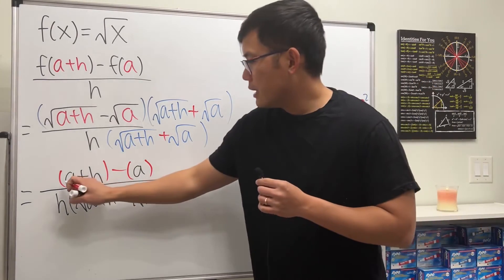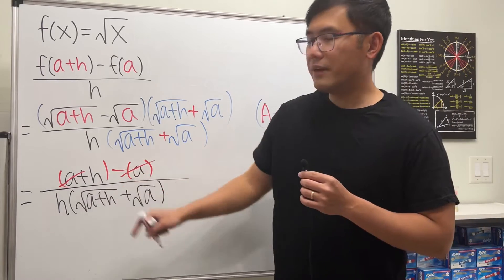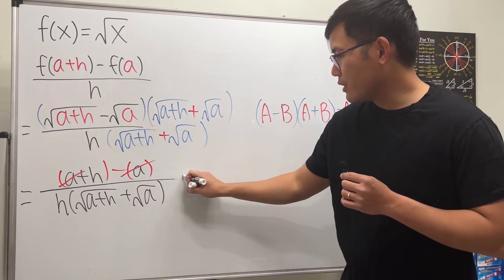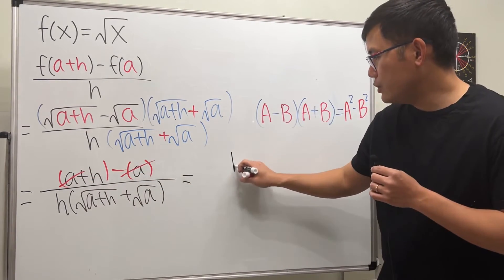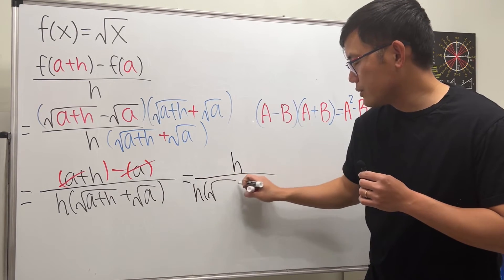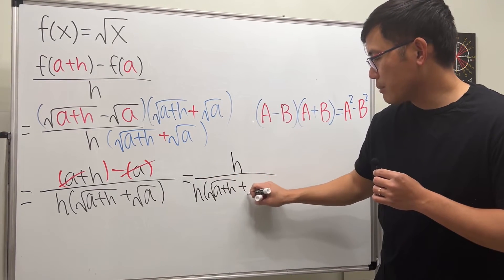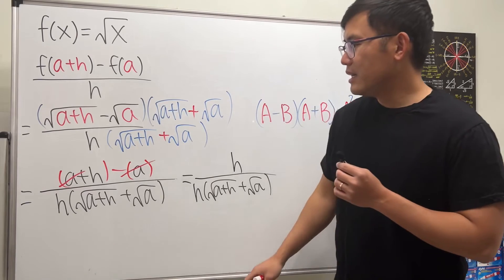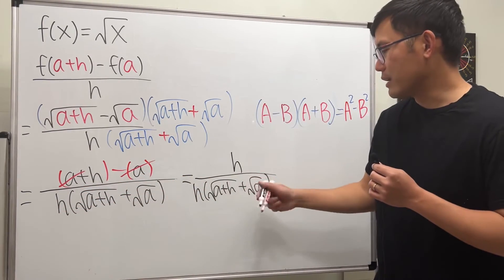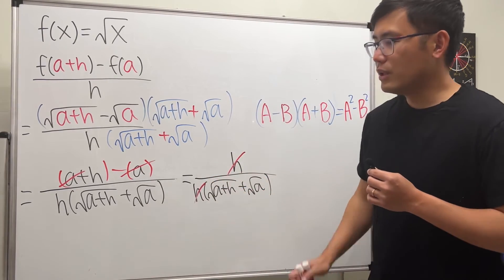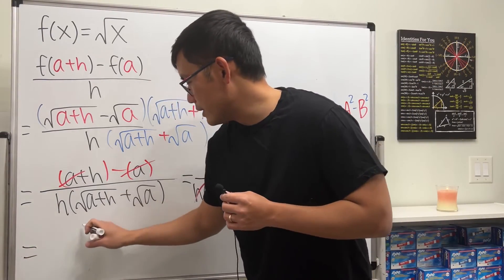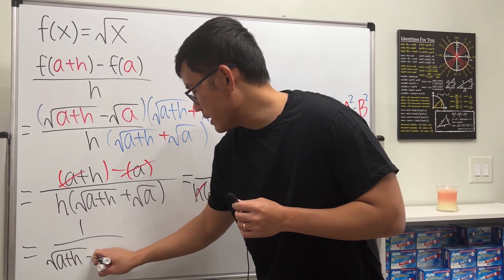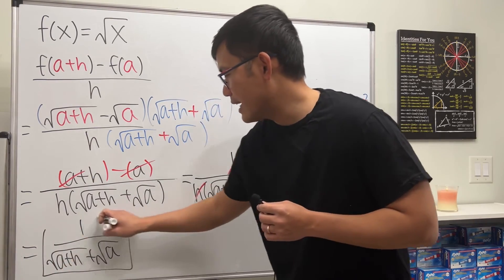Now the a and −a on the top cancel, leaving just h on top. That h over the h in the denominator cancels. So we have 1 over (√(a+h) + √a), and that's the final answer — we're done.